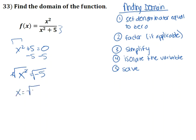You'll be left with x is equal to the square root of negative 5. We know that the square root of a negative number is an imaginary number, which is also denoted as i.